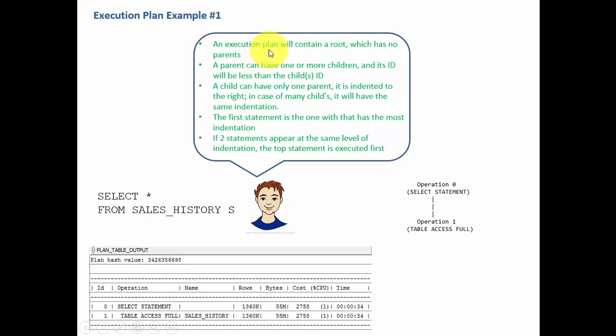I will repeat them one more time. An execution plan will contain a root. A parent can have one or more children and its ID will be less than the child's ID. A child can have only one parent. It is indented to the right. In case of many children, it will have the same indentation.